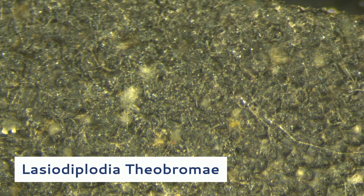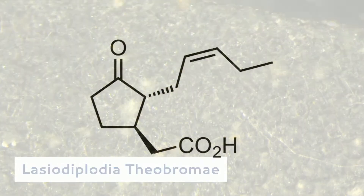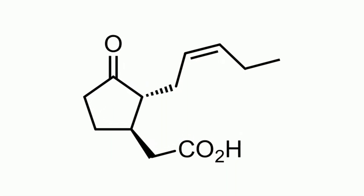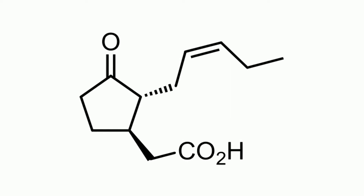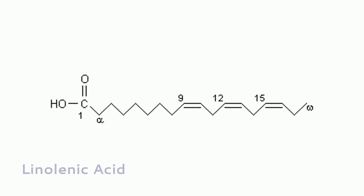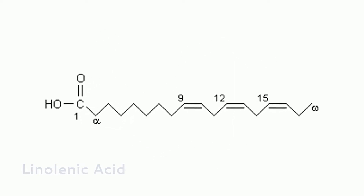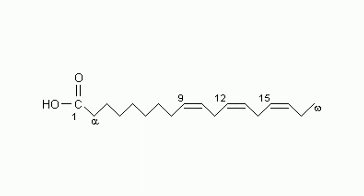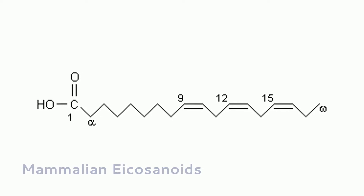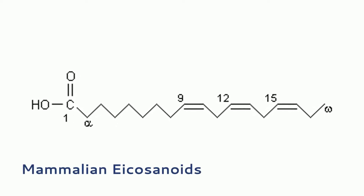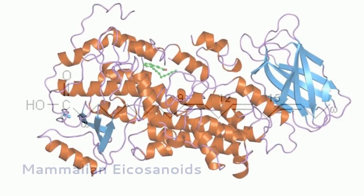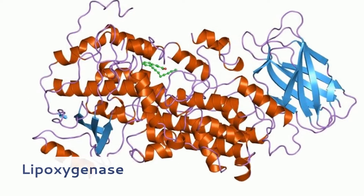Jasmonic acid, or JA, was first isolated from cultures of the fungus Lasiodiplodia theobromae. Jasmonic acid and its derivatives occur throughout the plant kingdom. Jasmonates are derived from linolenic acid in the lipoxygenase-dependent process. Their structure is similar to mammalian eicosanoids, which are also derived from lipids through the action of lipoxygenase.